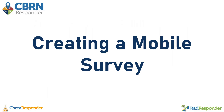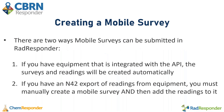There are two ways to create mobile surveys in Rad Responder. The first is to integrate your equipment with our API, and then the surveys and readings will automatically be created — this is the easiest way for the user. On the other hand, if you do not have integrated equipment, there is a two-step process: you must first manually create a mobile survey, and then obtain an N42 export of readings from an equipment item, which you can then upload to add readings to the mobile survey.